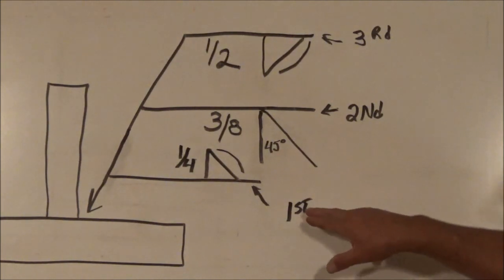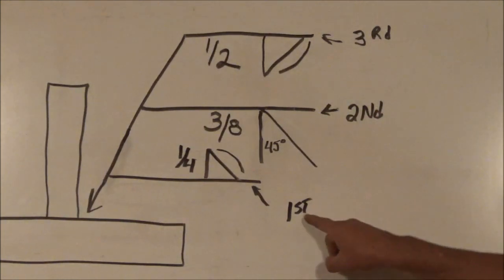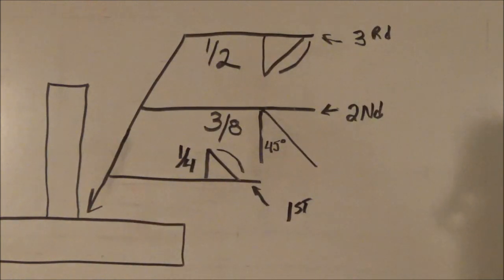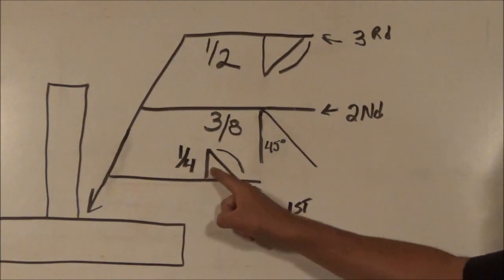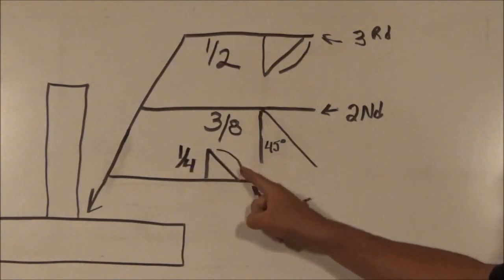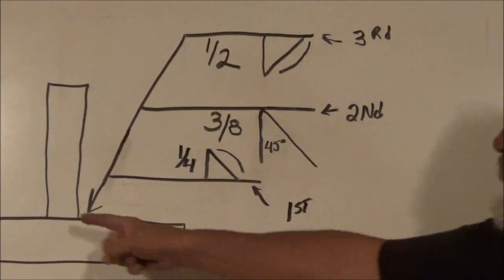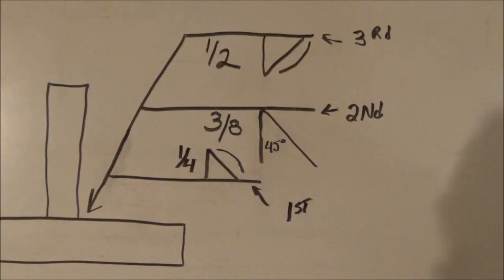Number one, we're going to do the first, second and third operation. The first operation to be done is going to be the one closest to where the arrow is pointing. All that's asking us for is a one quarter inch fillet weld convex on the other side, over here is where we're going to be putting our first weld.